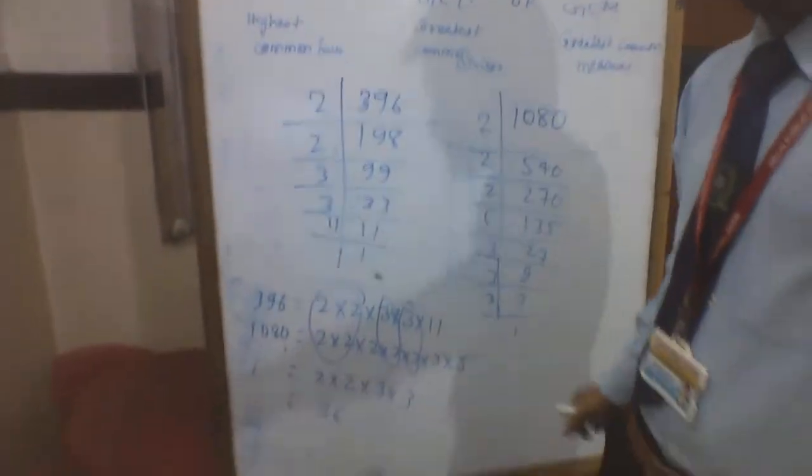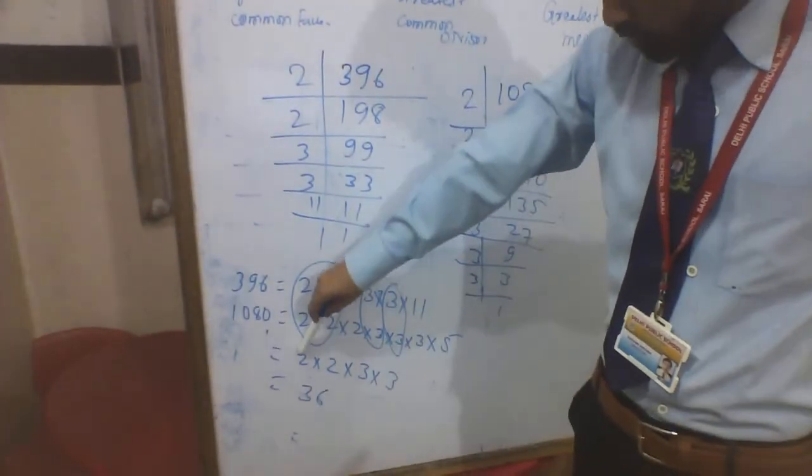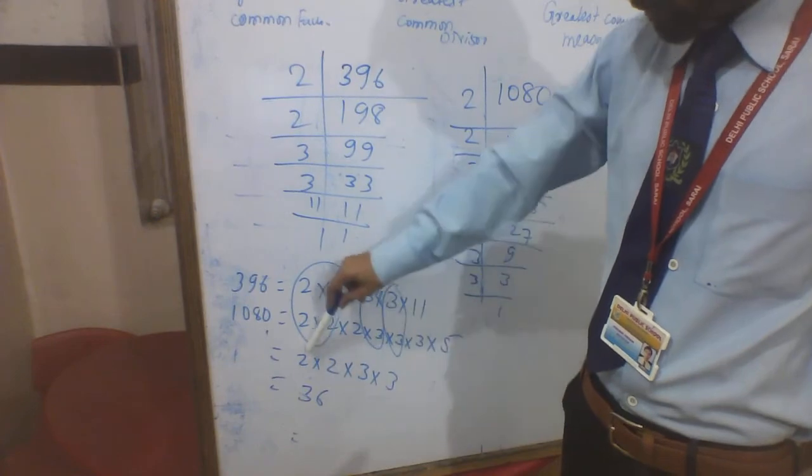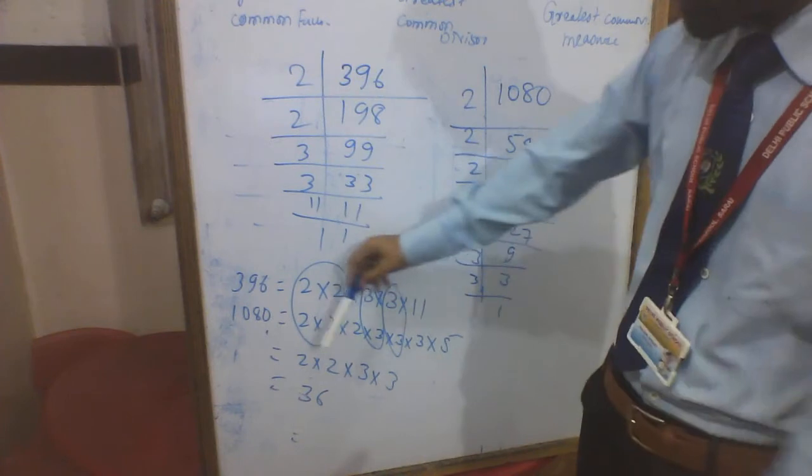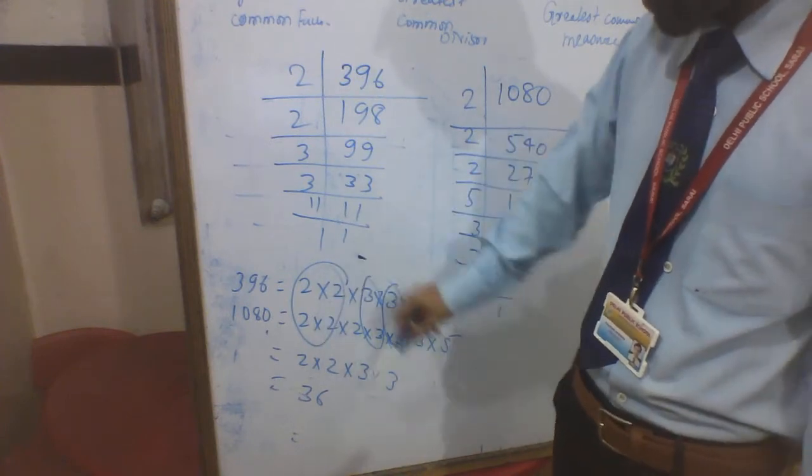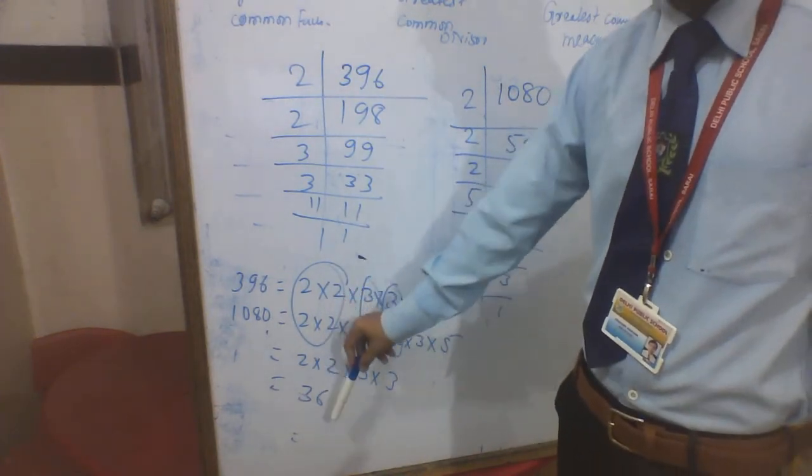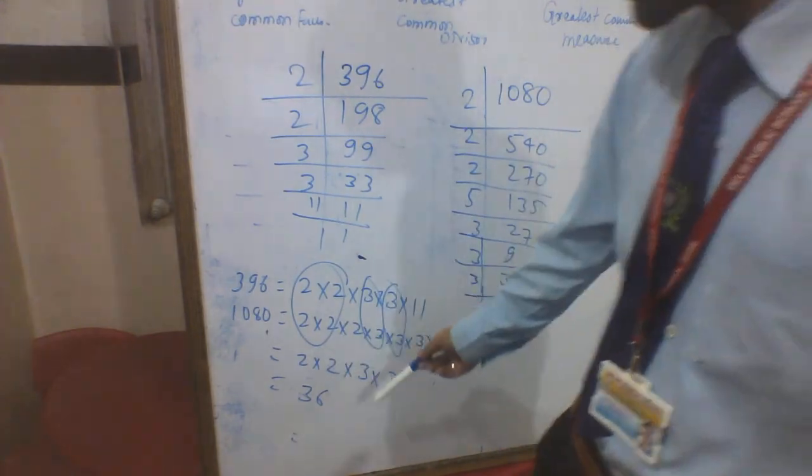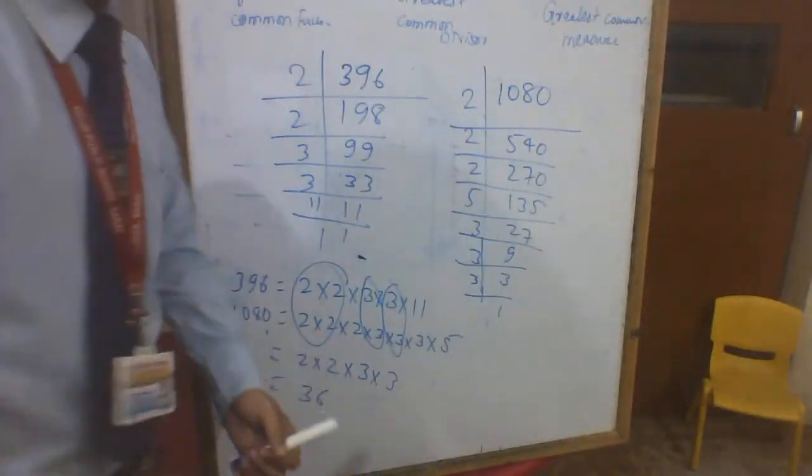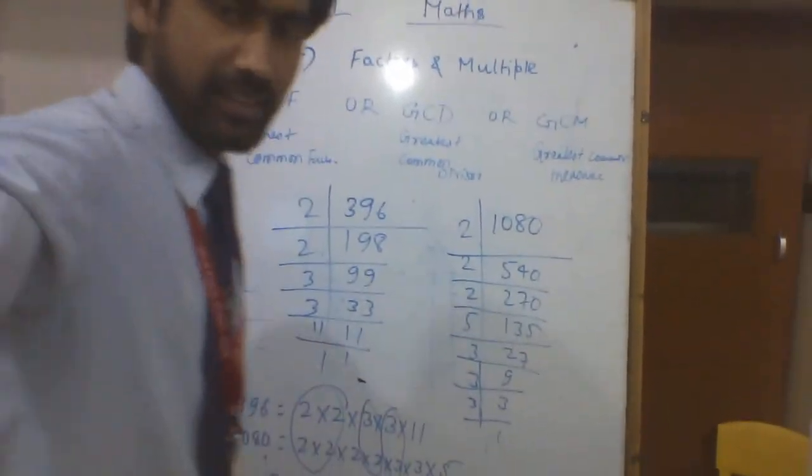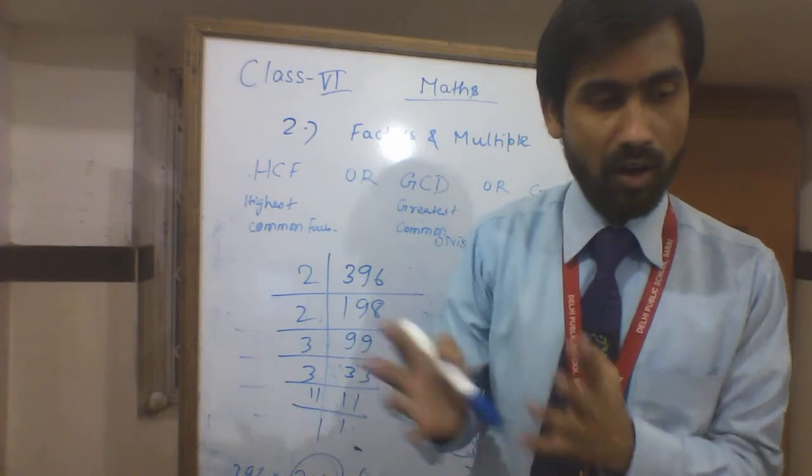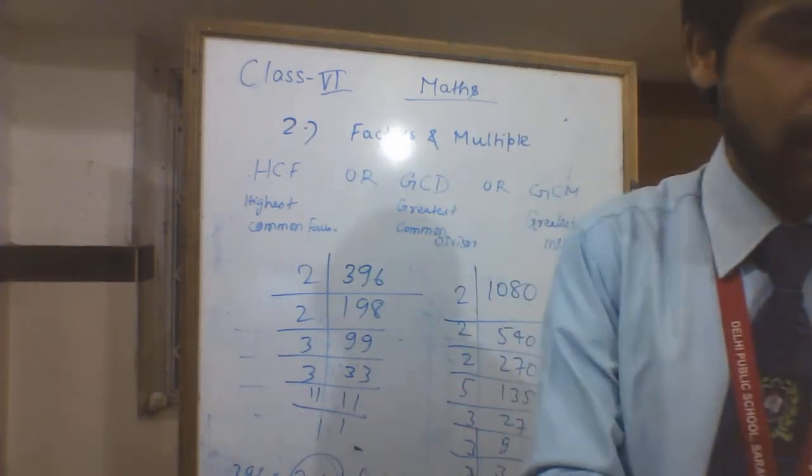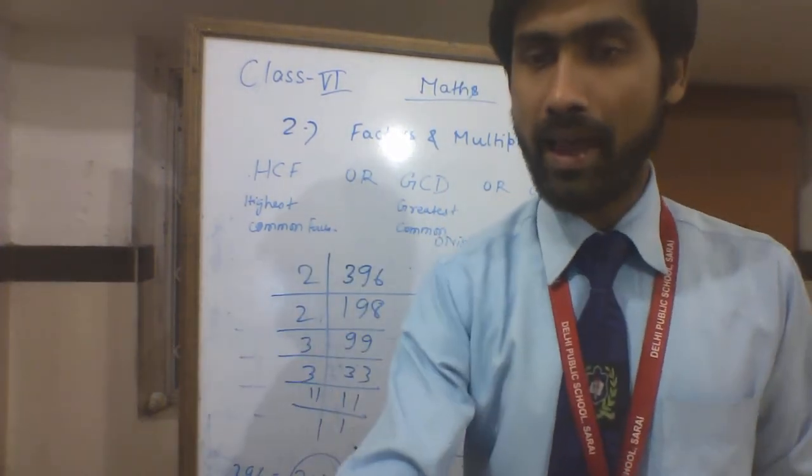Prime factorization method means we factor numbers into prime numbers, then multiply the common factors to get the highest common factor. You can make this an exercise. In the next video, we will talk about the division method. Until then, bye-bye. Have a nice day.